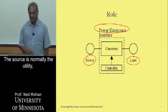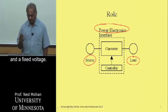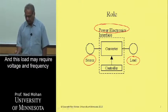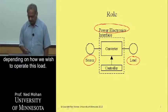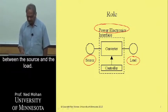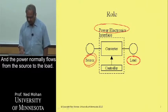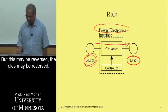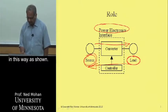The source is normally the utility and your power company, and it's usually providing a fixed frequency and fixed voltage. This load may require voltage and frequency to be varied depending upon how we wish to operate it. So we need this interface between the source and the load, and this power electronics consists of a converter and the controller. The power normally flows from the source to the load, but this may be reversed — the power flow may be in the opposite direction as shown.